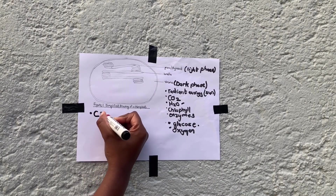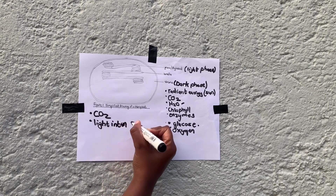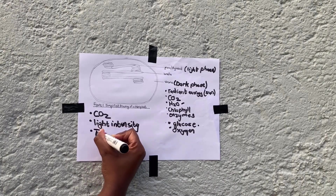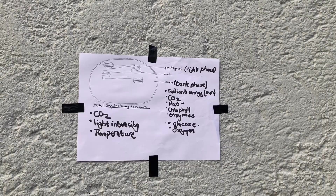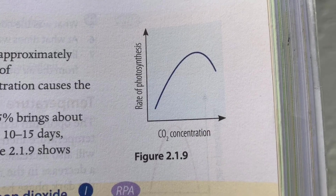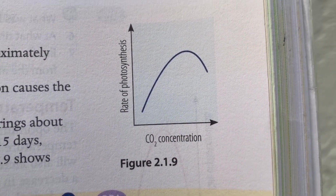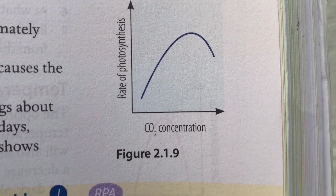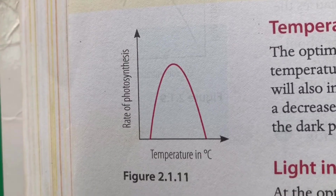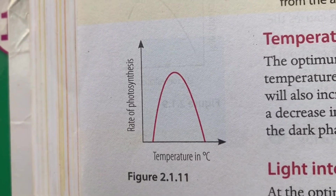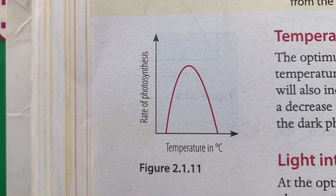Carbon dioxide, light intensity, and temperature are the three factors that influence the rate of photosynthesis. Carbon dioxide is a limiting factor. This graph also shows that with an increase in temperature, the rate of photosynthesis increases — but there is a limit. The optimum temperature for photosynthesis is 25 degrees Celsius, and a temperature higher than that decreases the rate of photosynthesis. So temperature is also a limiting factor.